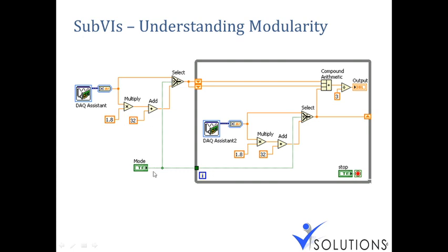There is an option to choose a mode using Boolean data. The Select function works like a case structure — if true, the top terminal passes out; if false, the lower terminal passes. So you can choose either Celsius data or Fahrenheit data. They use a shift register, repeat the data three times, and divide by three to find the average. Internally, the same code is repeated again — there is a repetition of the same code.